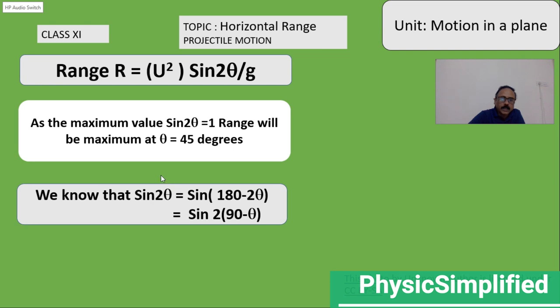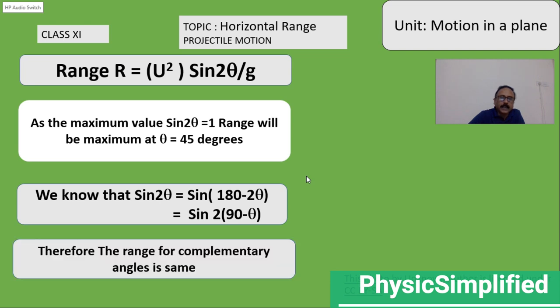So, if this gives u² sin 2θ by g gives the formula of range. Therefore, this should also be giving the formula of range: u² sin 2(90 - θ). But if you observe the angle, it is 90 - θ and here it is θ. That means the range for complementary angles is same.